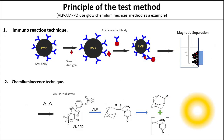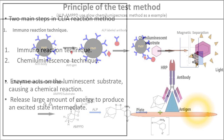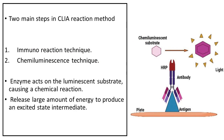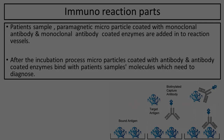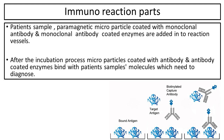There are two main steps in chemiluminescence immunoassay: the immunoreaction technique and the chemiluminescence technique. The enzyme in the immune reaction acts on the luminescent substrate, causing a chemical reaction and releasing a large amount of energy to produce an excited state intermediate. In the first step, patient sample, paramagnetic microparticles coated with monoclonal antibody, and monoclonal antibody-coated enzymes are added into reaction vessels.